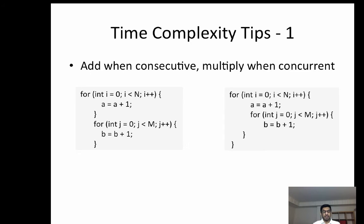Clearly, the time complexity of the first for loop is N. Clearly, the time complexity for the second for loop is M. But since these loops are not nested, they are one after the other, you add their time complexities. The total time complexity is N plus M.